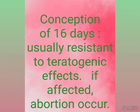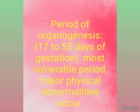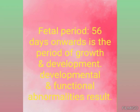Consumption up to 16 days is usually resistant to teratogenic effect. If the effect is present at 16 days, mostly abortion occurs. The second period is the period of organogenesis, that is 17 to 55 days of gestation. It is the most vulnerable period, and major physical abnormalities occur in this period.